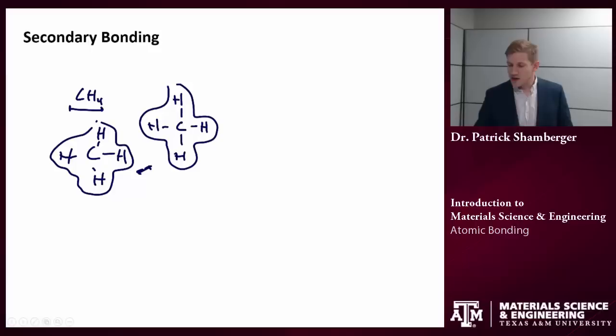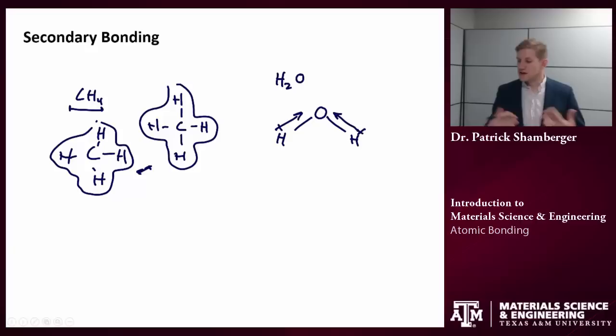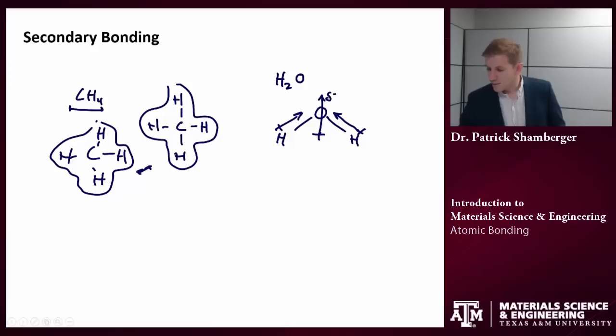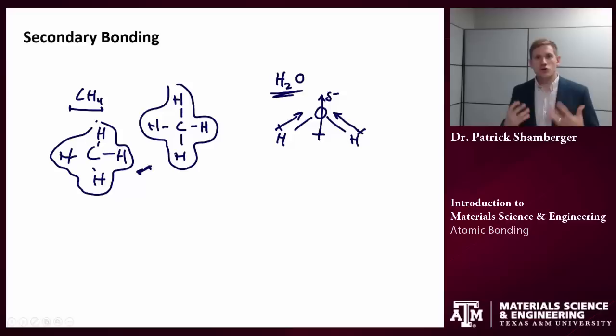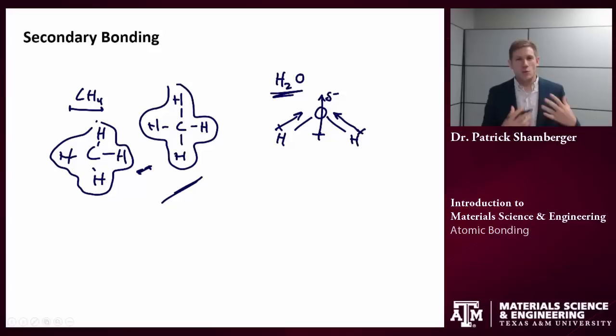If I look at the interaction between a nonpolar molecule and a polar molecule — say water — water has a bent structure. Oxygen is electronegative, so there is a net dipole in the system: slightly more negative charge around the oxygen and slightly more positive charge near the hydrogen side. When this polar molecule comes near something nonpolar like methane, it can induce a dipole — a dipole–non-dipole interaction. These tend to be pretty weak. When considering two polar molecules — like water to water — they both have net dipoles, so the interaction can be slightly stronger, but still relatively weak compared to primary bonding.